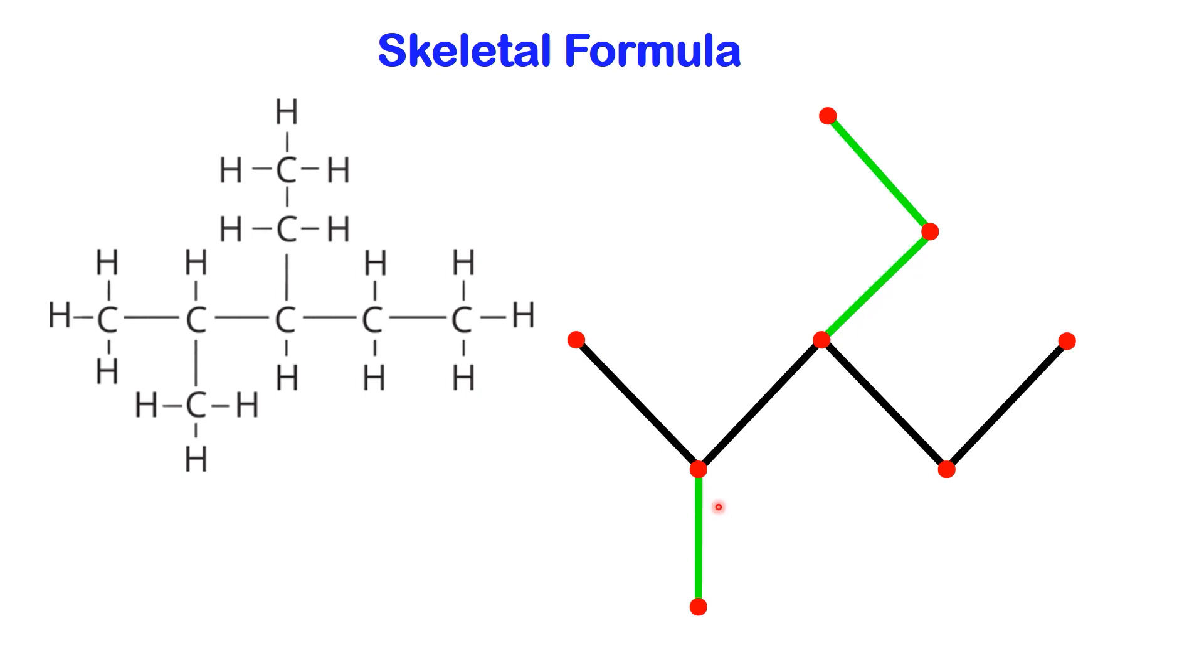For example, the first line signifies the bond between the first and second carbons, the second line represents the bond between the second and third carbons, and so on.